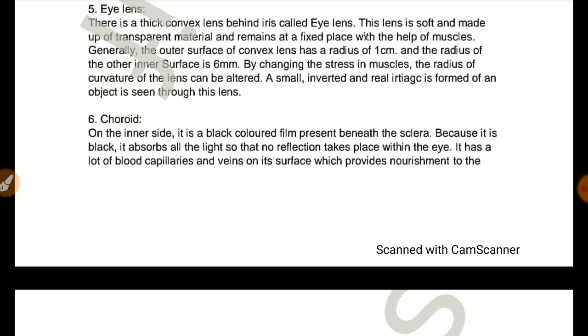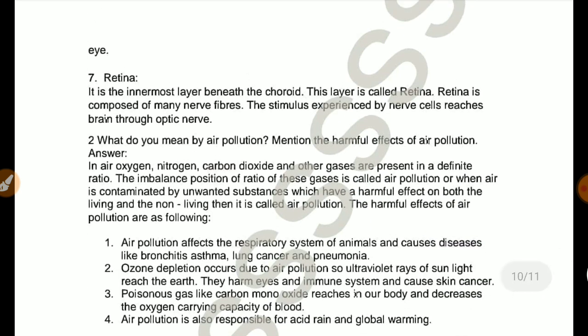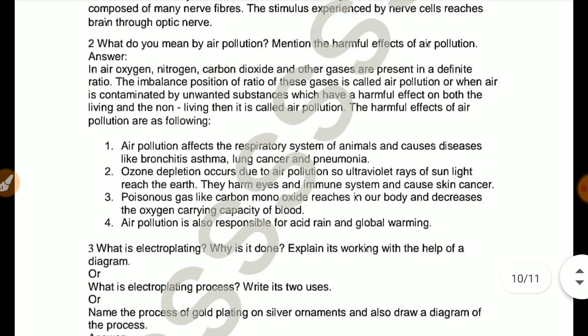Choroid: The inner side is black colored film present beneath the sclera. Because it is black, it absorbs all the light so that no reflection takes place within the eye. It has lots of blood capillaries and veins on its surface which provides nourishment to the eye. Retina: It is innermost layer beneath the choroid. The layer is called retina. Retina is composed of many nerve fibers. The stimulus experienced by nerve cells reach brain through optic nerve.